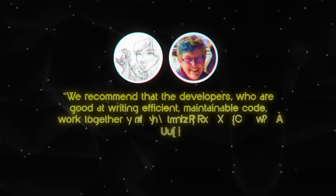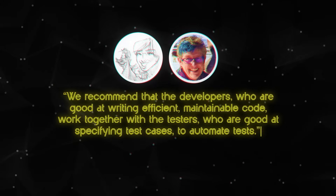My number one tip for speeding up the thinking around writing tests is to bring a friend. It's always better to do something together, especially if it's something we don't want to do. This is backed up by Lisa Crispin and Janet Gregory. They say in their book Agile Testing Condensed, we recommend that the developers, who are good at writing efficient maintainable code, work together with the testers, who are good at specifying test cases, to automate tests. The testers get to think about all the ways they could break your code, and then you get to write that down in an executable specification — otherwise known as a test — and write the application code so that these terrible things never happen. Working together makes this easier and leads to better quality tests.